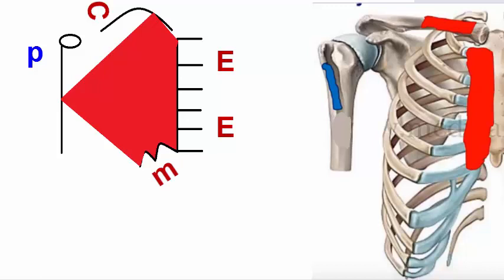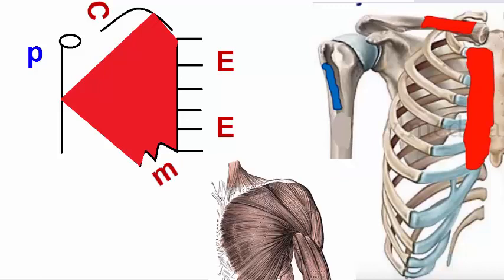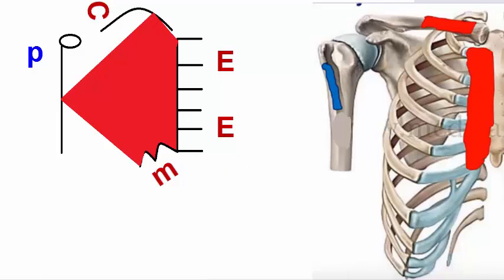The pectoralis major is a thick, fan-shaped muscle situated at the chest of the human body. The letters shown in red represent the origins of the pectoralis major. The first origin is the clavicular head, arising from the medial half of the anterior surface of the clavicle.